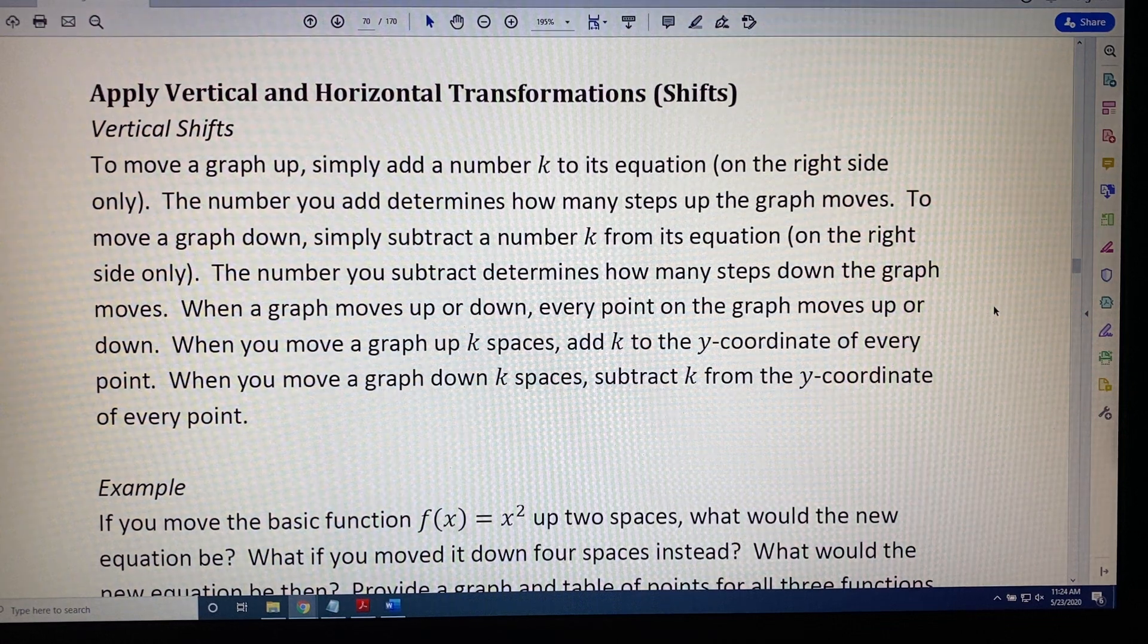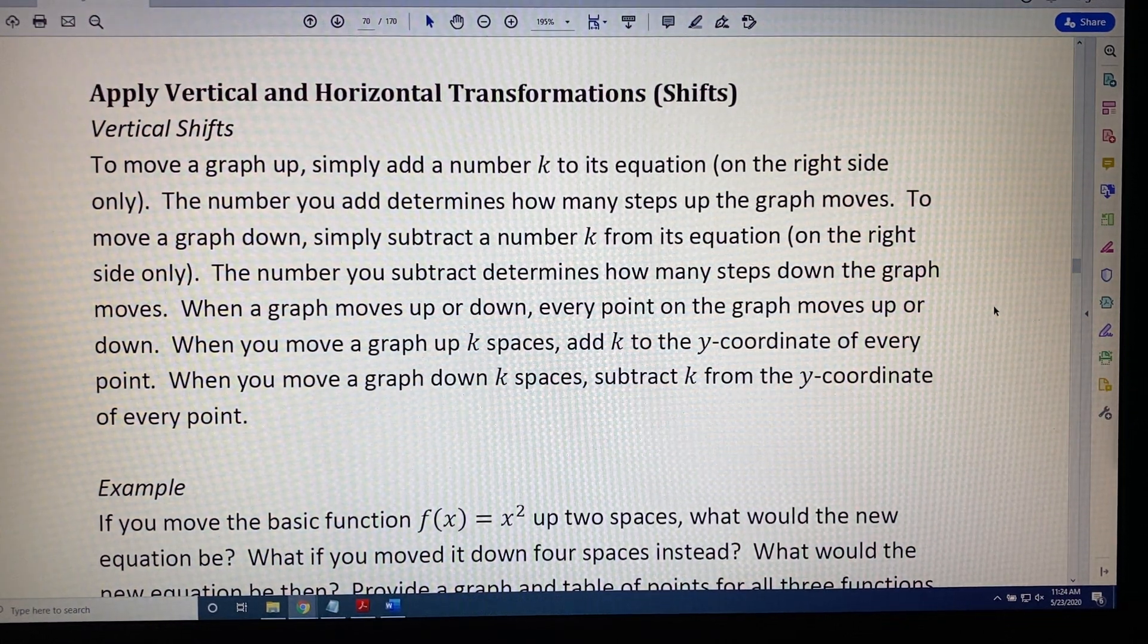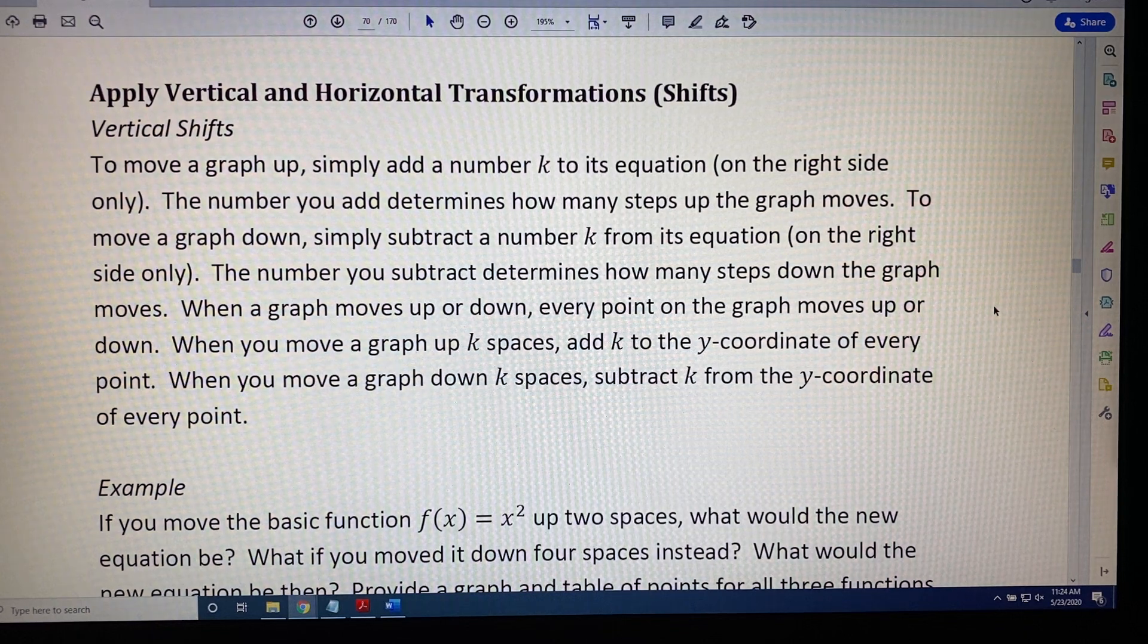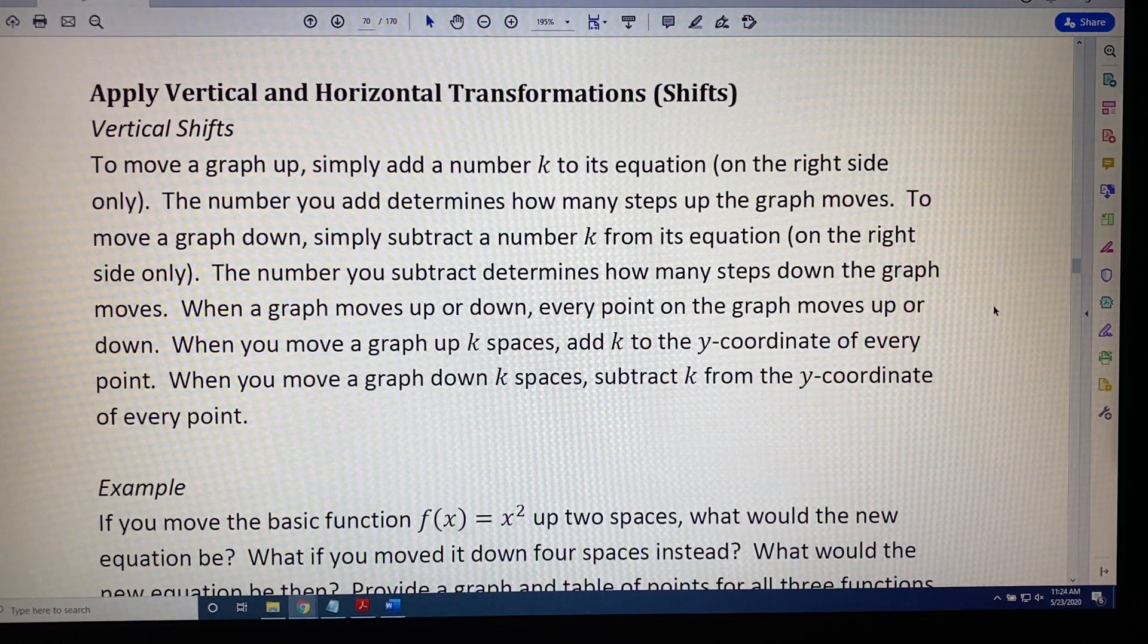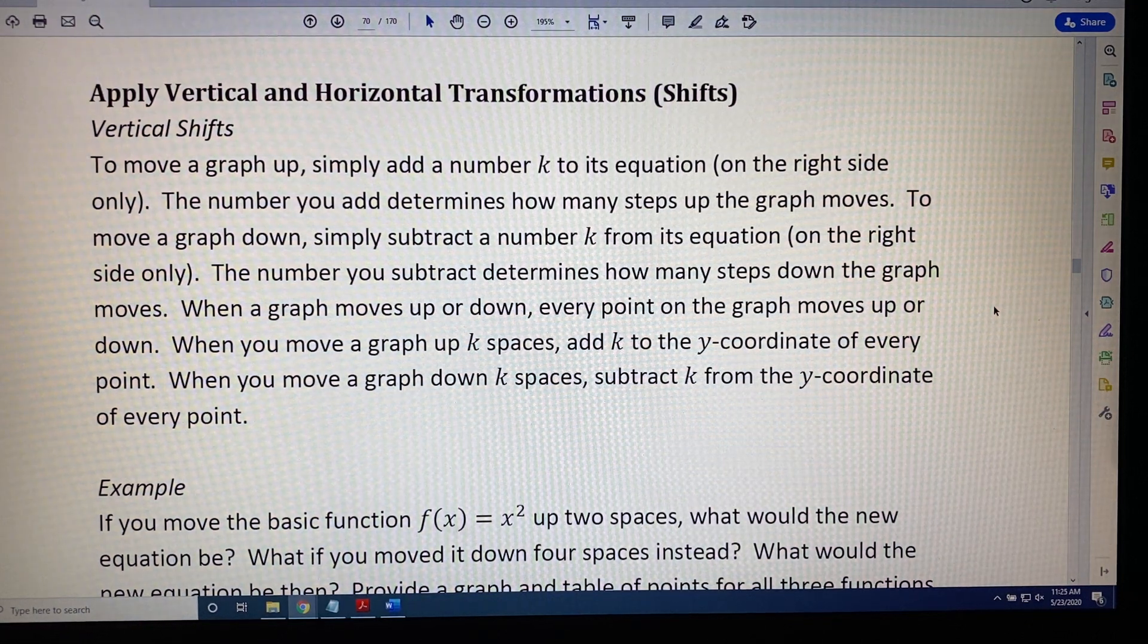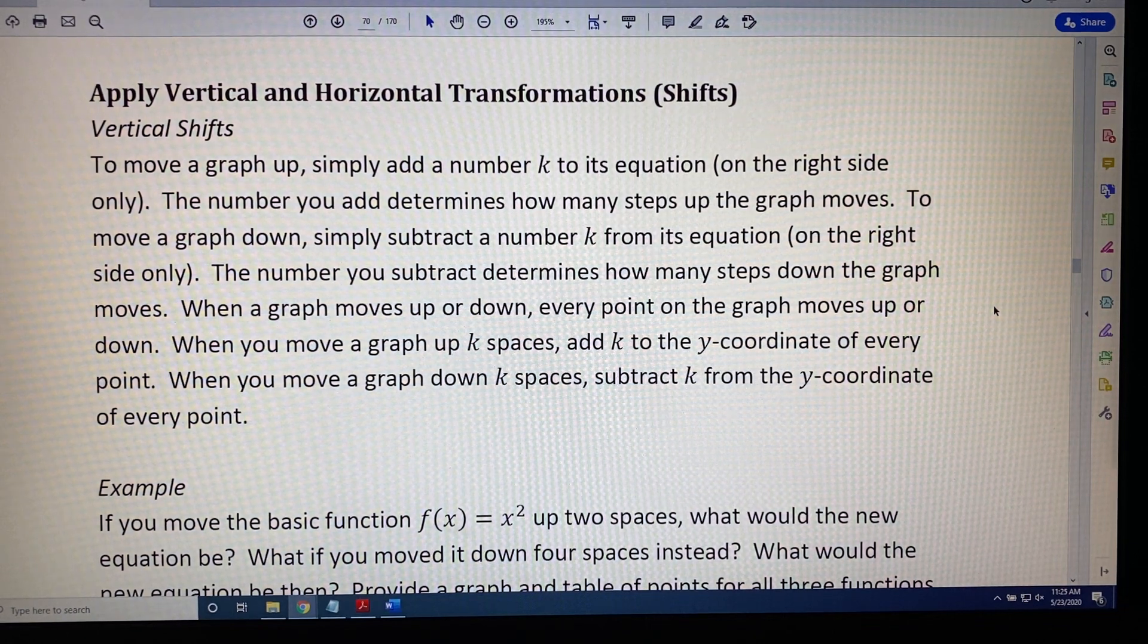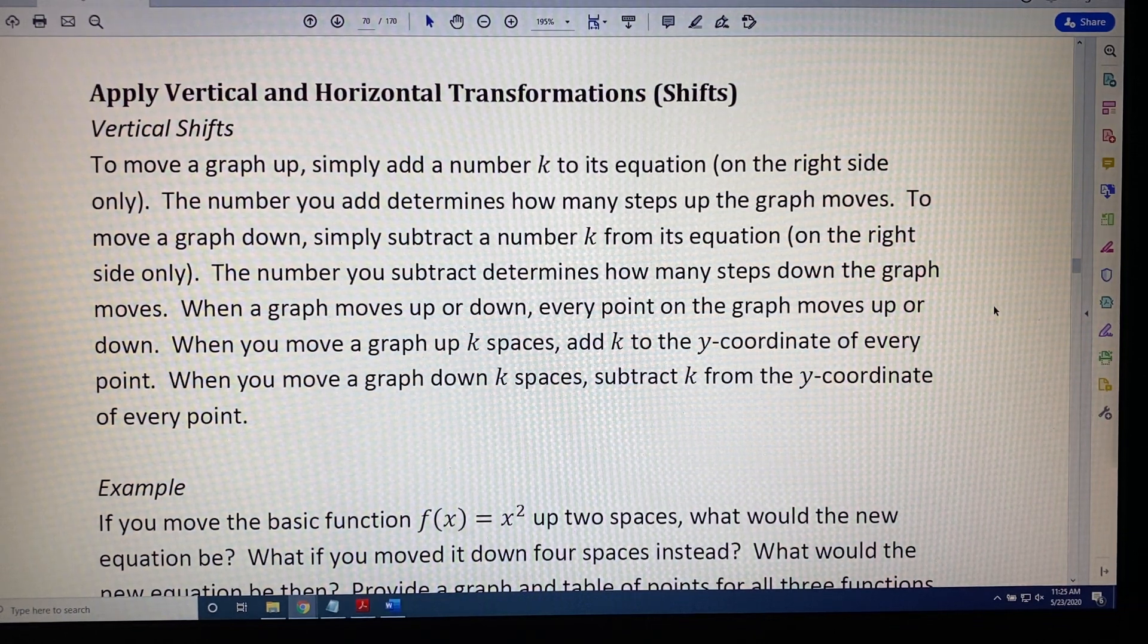When a graph moves up or down, every point on the graph moves up or down. When you move a graph up k spaces, add k to the y-coordinate of every point. When you move a graph down k spaces, subtract k from the y-coordinate of every point.